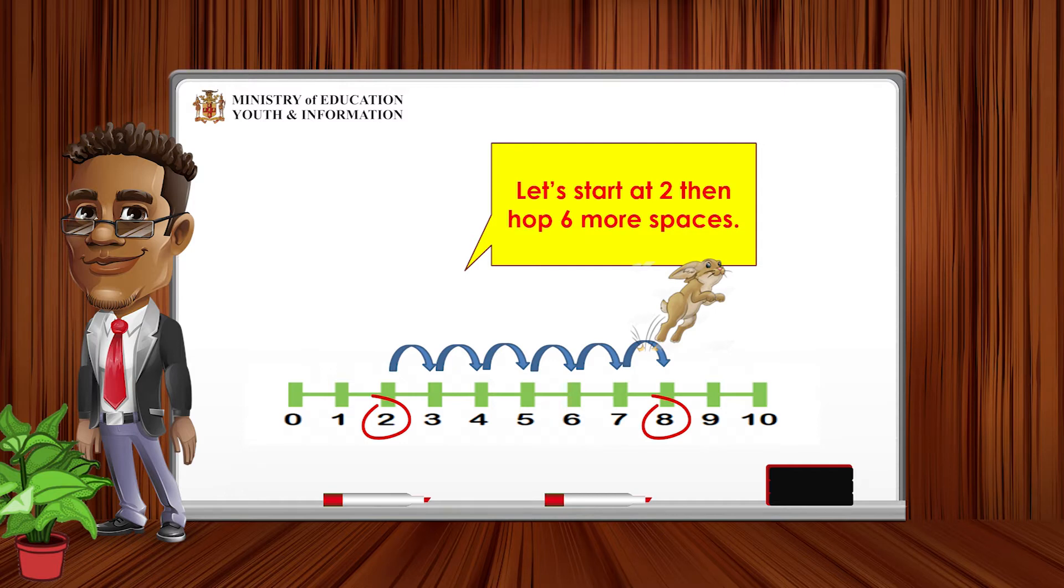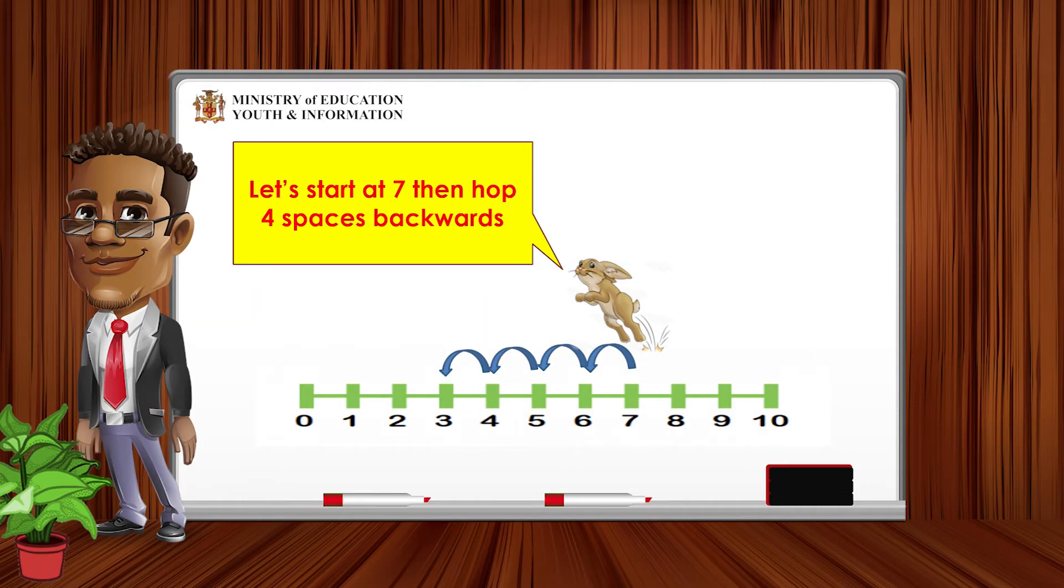Let's take a look at the bunny hopping again. This time, the bunny will start hopping from 7, then hops 4 times backwards or hops 4 times to the left while counting off by 1. What do you realize about the number he lands on this time? You are correct if you said the number he lands on is smaller than the number he started at.